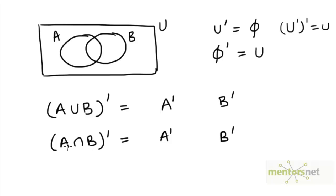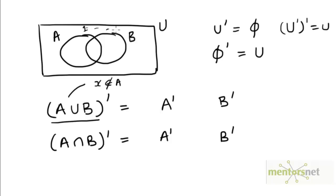Likewise, the intersection of A and B, and the complement of that, in terms of A complement and B complement. A union B complement is the set of all elements that are neither in A nor B. So if X is an arbitrary element of A union B complement, we can say that X does not belong to A because X lies outside of both A and B. So X lies in the particular region outside of both circles A and B.